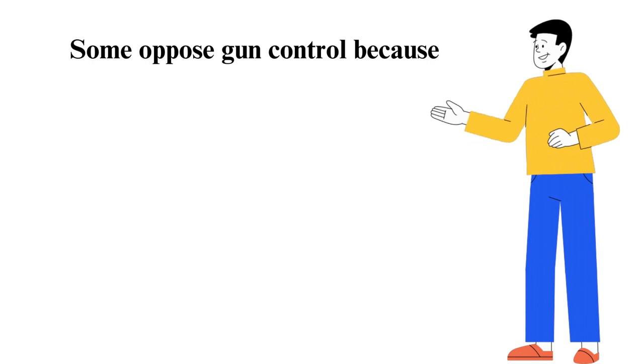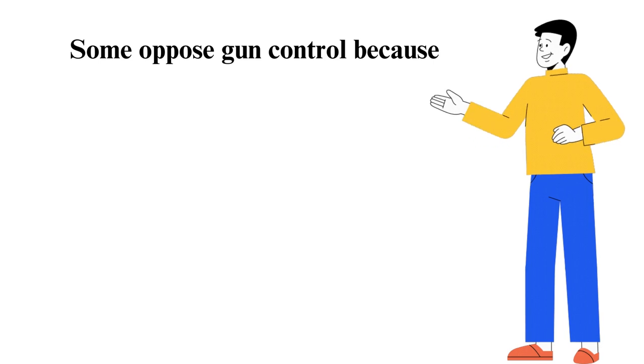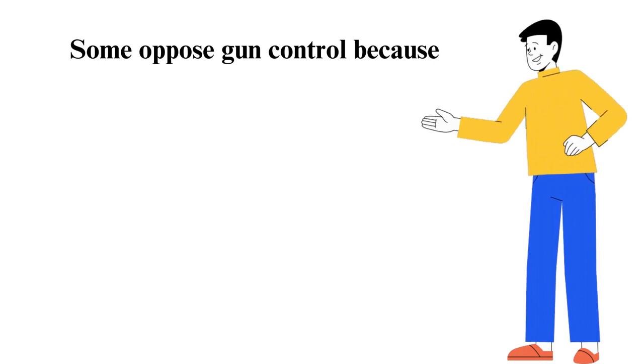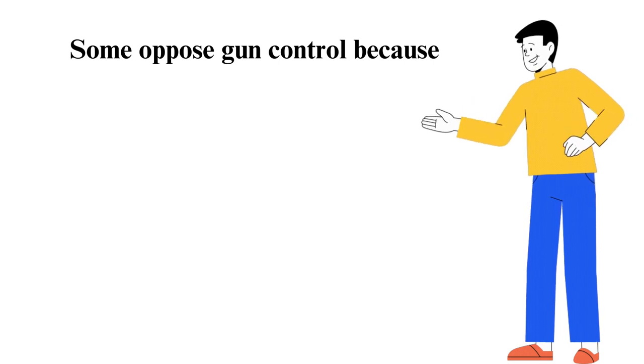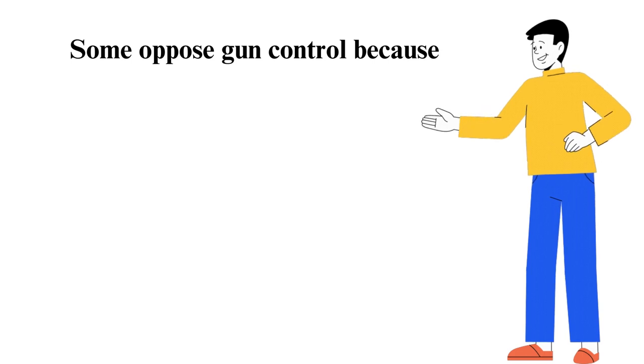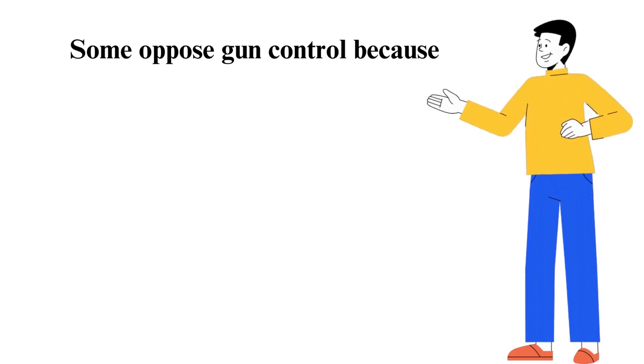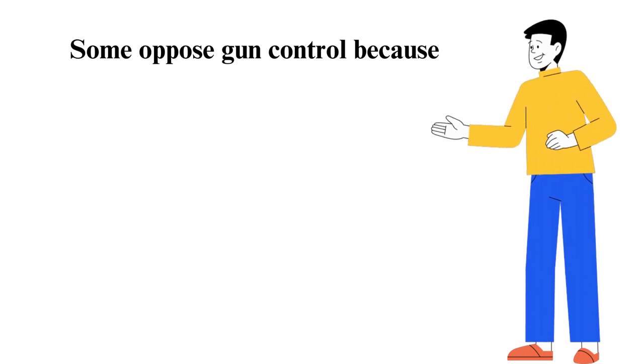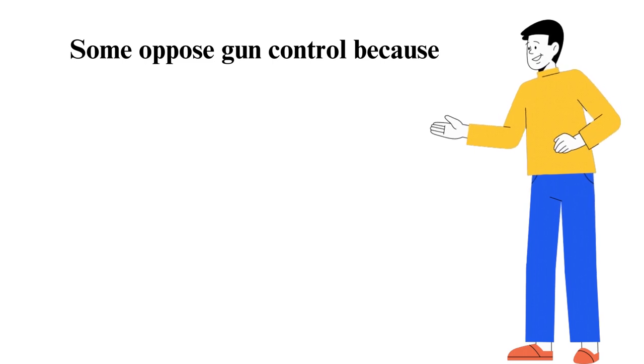Background checks are an invasion of privacy. Very few people are killed by guns in comparison to heart issues, cancer, and cigarettes. People will use other means for suicide—for example, Lithuania has a low gun ownership rate but a high suicide rate. Training on gun safety can reduce accidents. Guns allow civilians to protect themselves and their country if necessary.